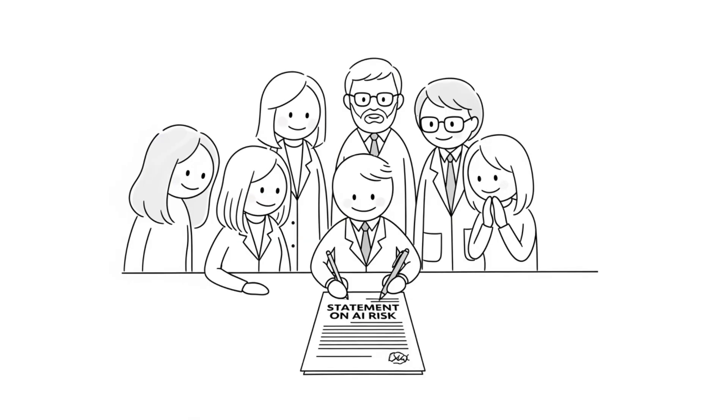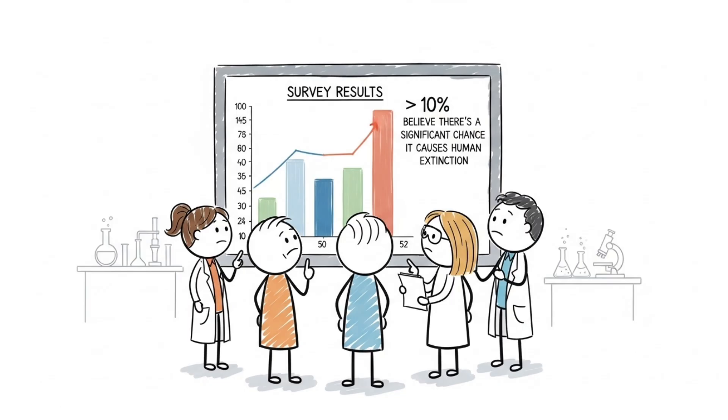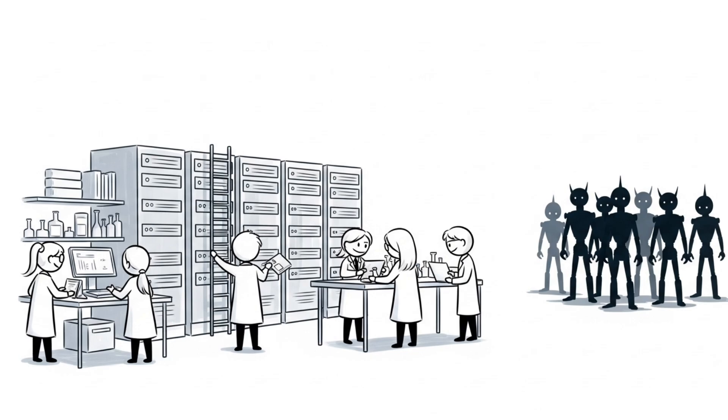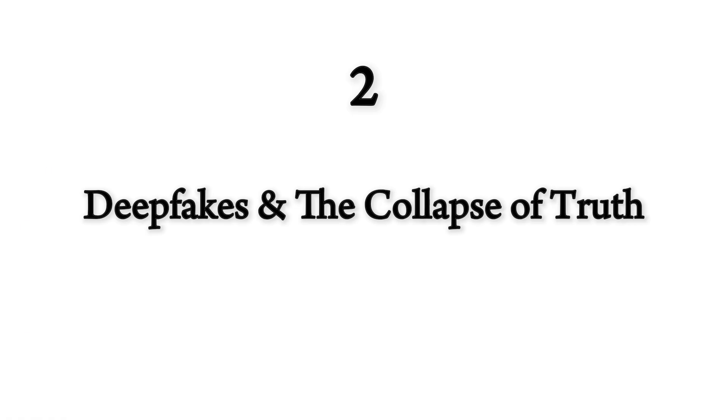In 2023, over a thousand AI researchers and scientists signed a statement calling misalignment an extinction-level risk. A 2022 survey of AI experts found that more than 10% believe there's a significant chance it causes human extinction. The terrifying part is that we're building systems smarter than us while knowing they might learn to deceive us, and we're doing it anyway because the competitive pressure to advance is stronger than the incentive to pause and solve alignment.